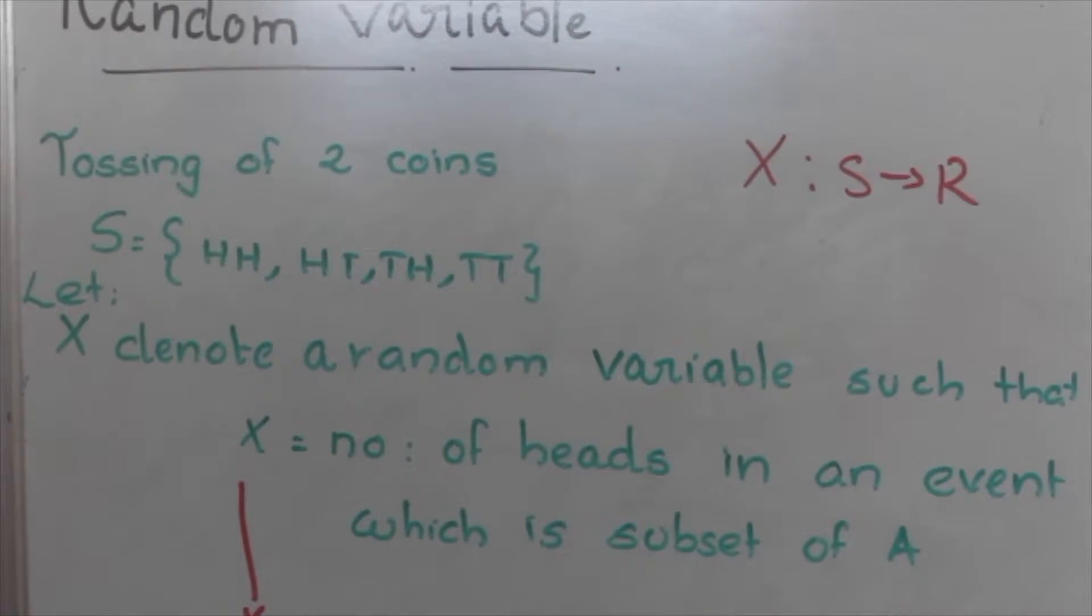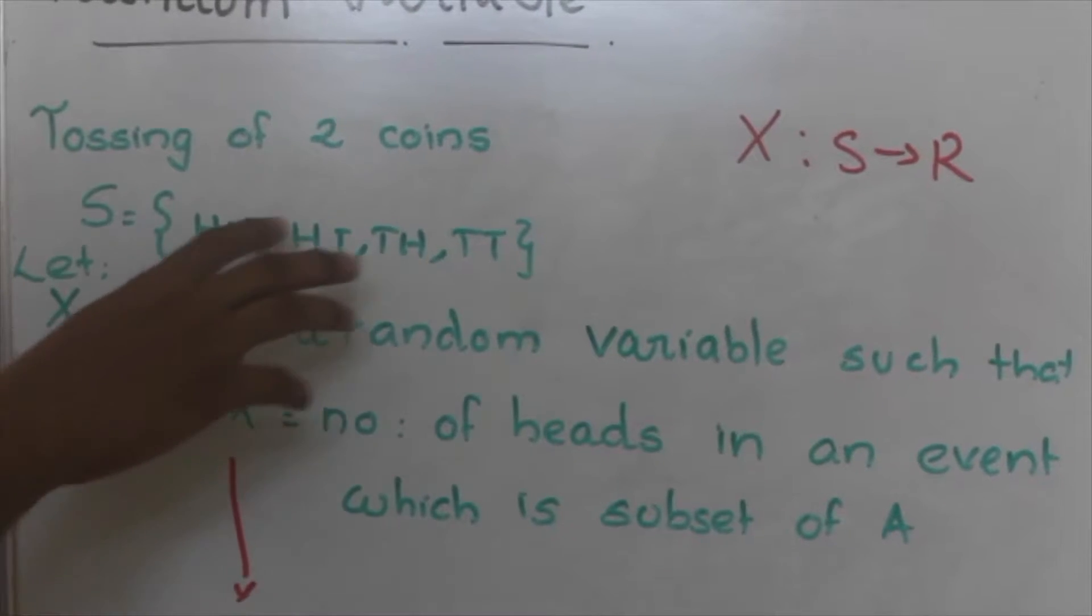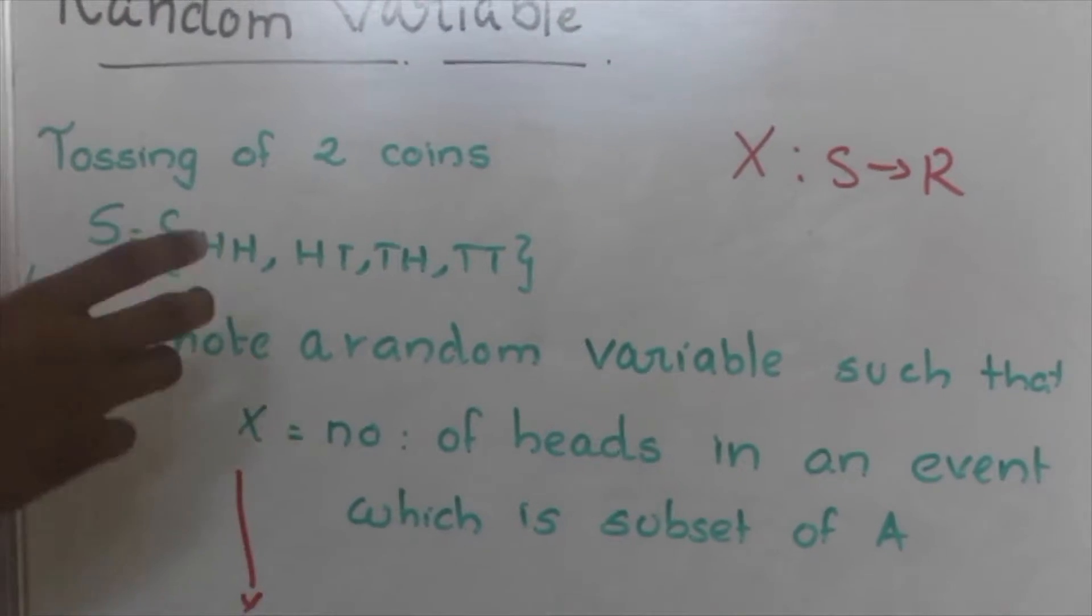Suppose when we are tossing two coins, the possible outcomes are HH, HT, TH and TT. So we call it a sample set.